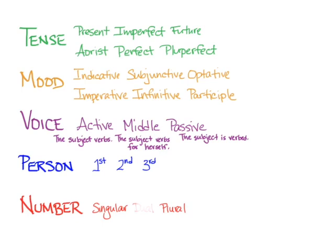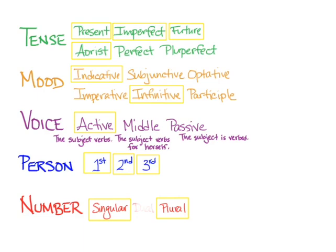So these are the five things every Greek verb will have. To start with, in unit 2, Hanson and Quinn will have you learn four tenses in the indicative mood with some infinitives, only in the active voice, in first, second, and third person singular and plural. That's going to be a lot in unit 2, but then you'll have much more you can say with Greek sentences.